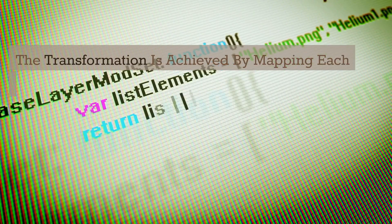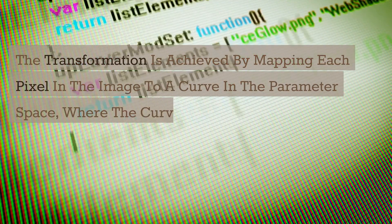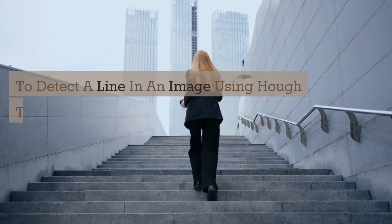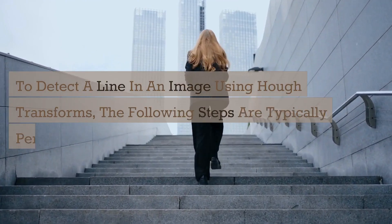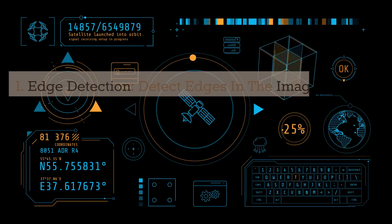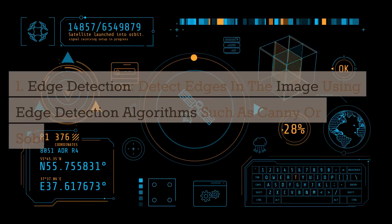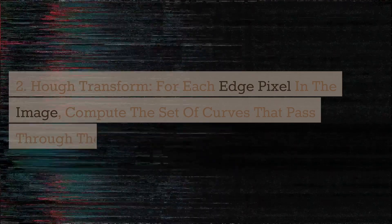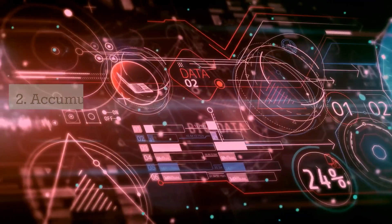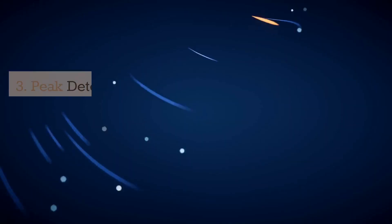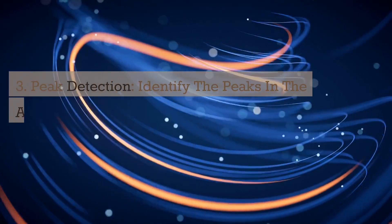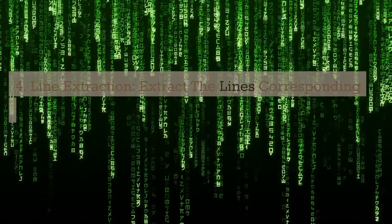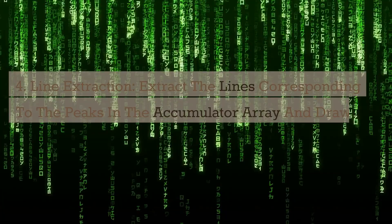To detect a line in an image using Hough Transforms, the following steps are typically performed: 1. Edge Detection — detect edges using algorithms such as Canny or Sobel. 2. Hough Transform — for each edge pixel, compute the set of curves passing through the pixel in the parameter space, and accumulate the curves in a Hough accumulator array. 3. Peak Detection — identify the peaks in the accumulator array, which correspond to lines in the image. 4. Line Extraction — extract the lines corresponding to the peaks and draw them on the image.